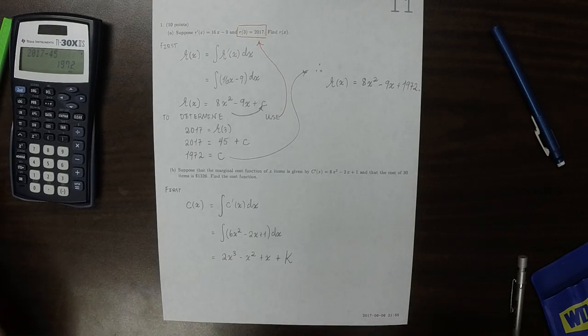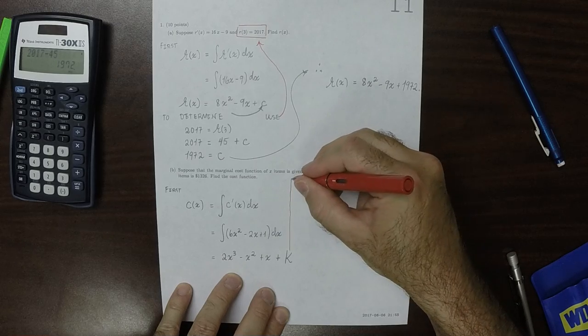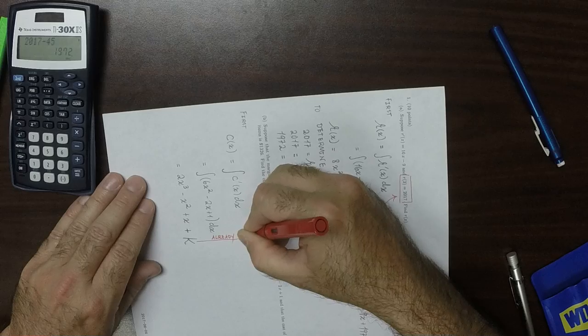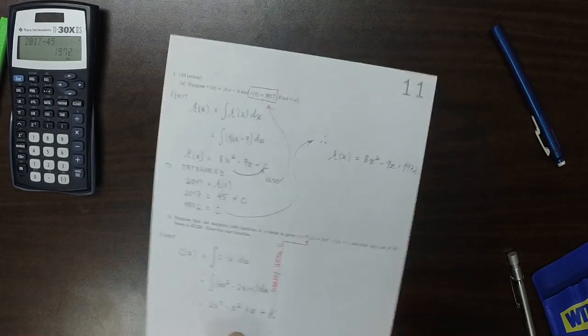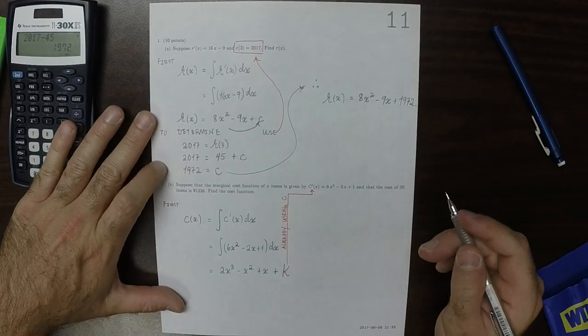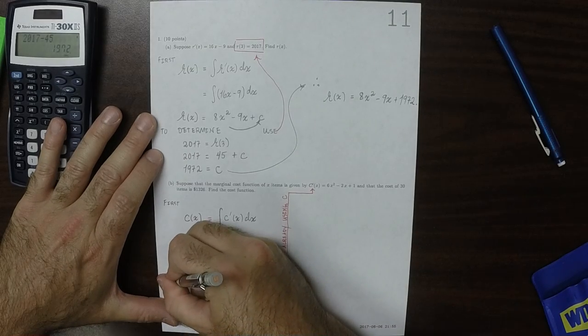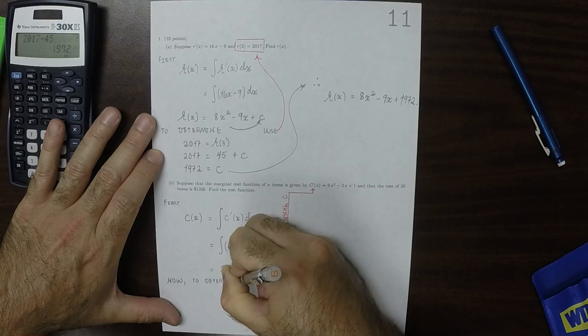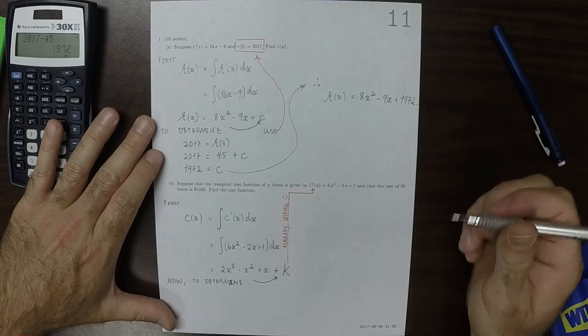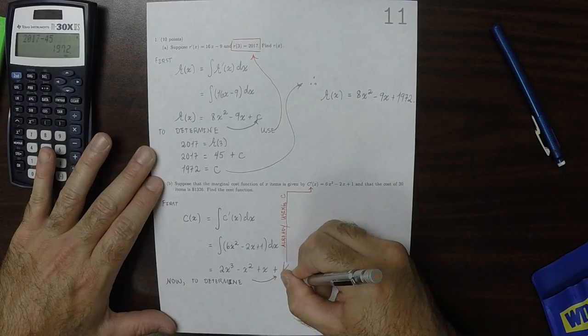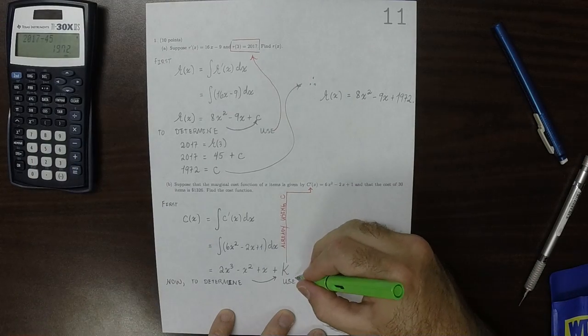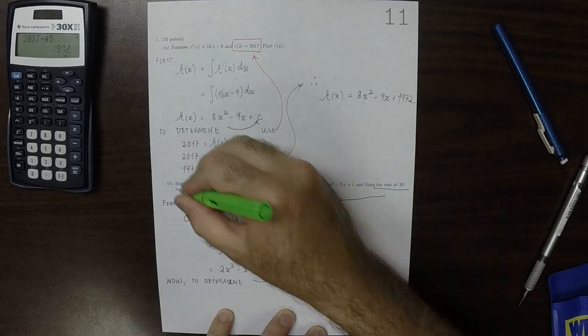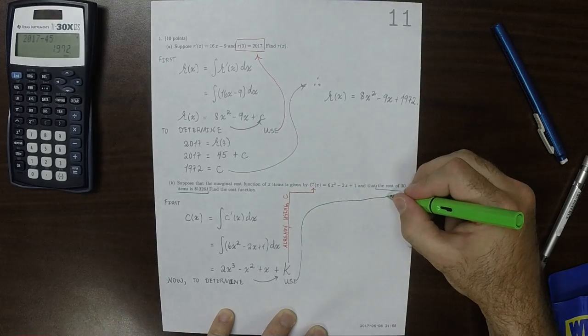So the reason why I'm using k is because I don't want to confuse myself or the grader, because we're already using c. So it would be confusing to write another c there. So I'll write k for the unknown constant. So now, to determine k, we'll use the extra piece of information.